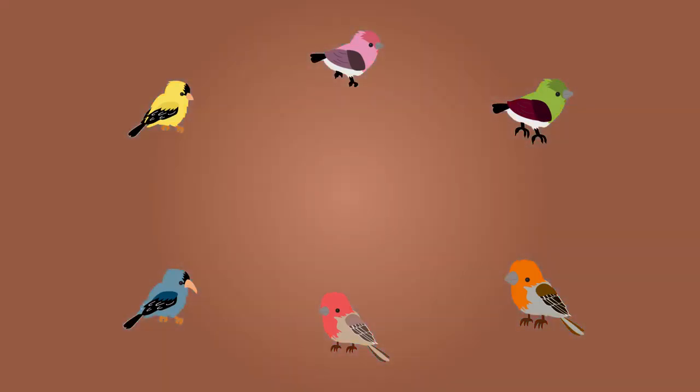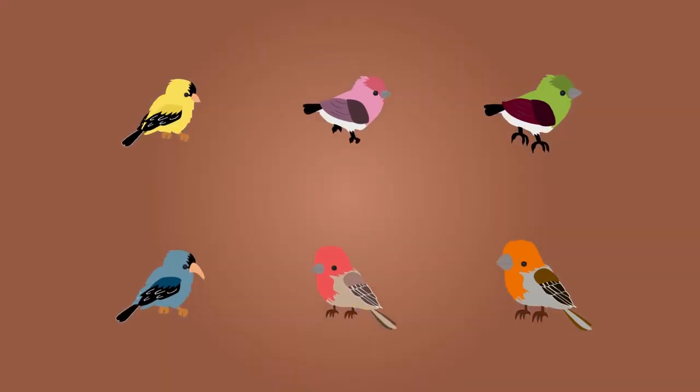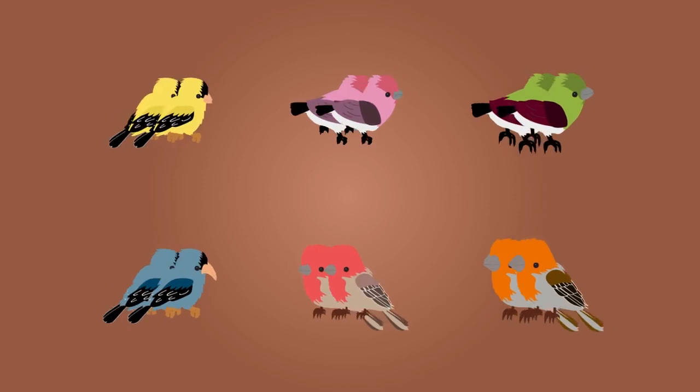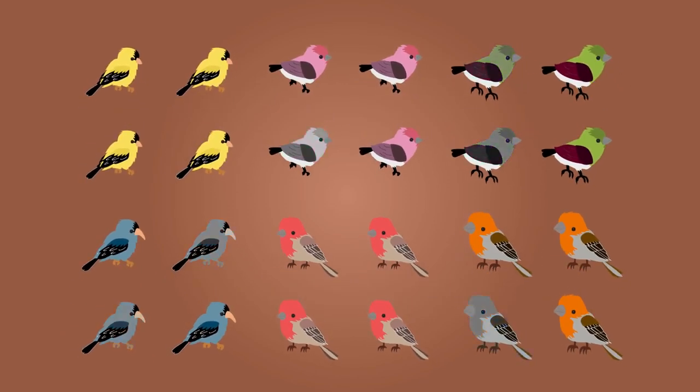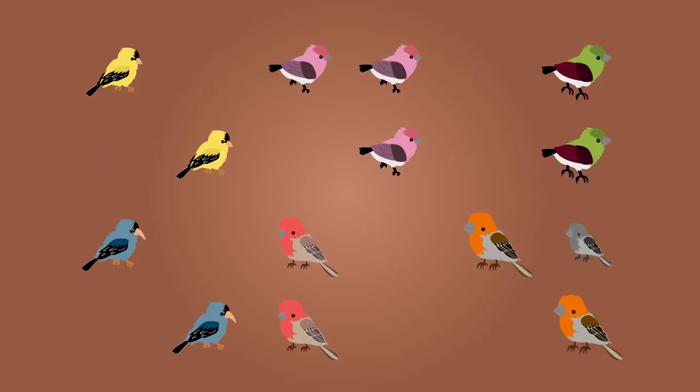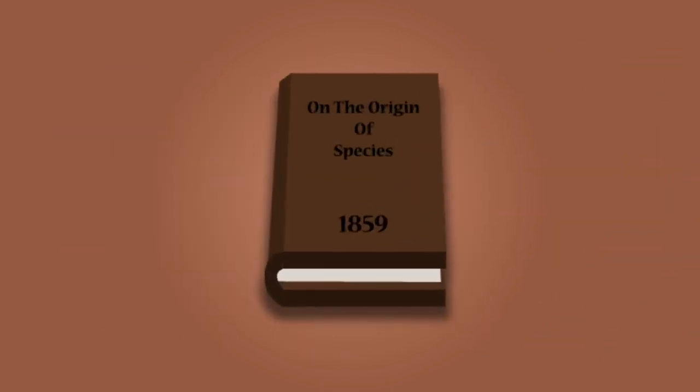Darwin proposed that the variations seen both within and between the finch species arose by chance. Variations which gave any individual a competitive advantage made them more likely to survive and therefore reproduce, out-competing those with less advantageous characteristics. Darwin called this theory natural selection, and he published it in his book On the Origin of Species in 1859.